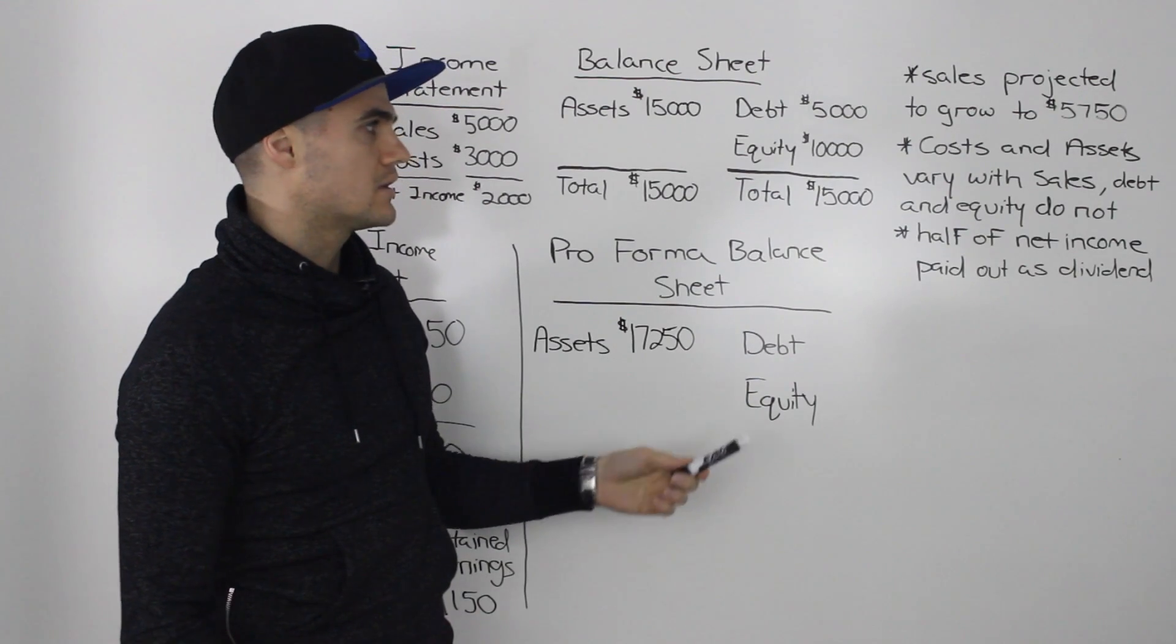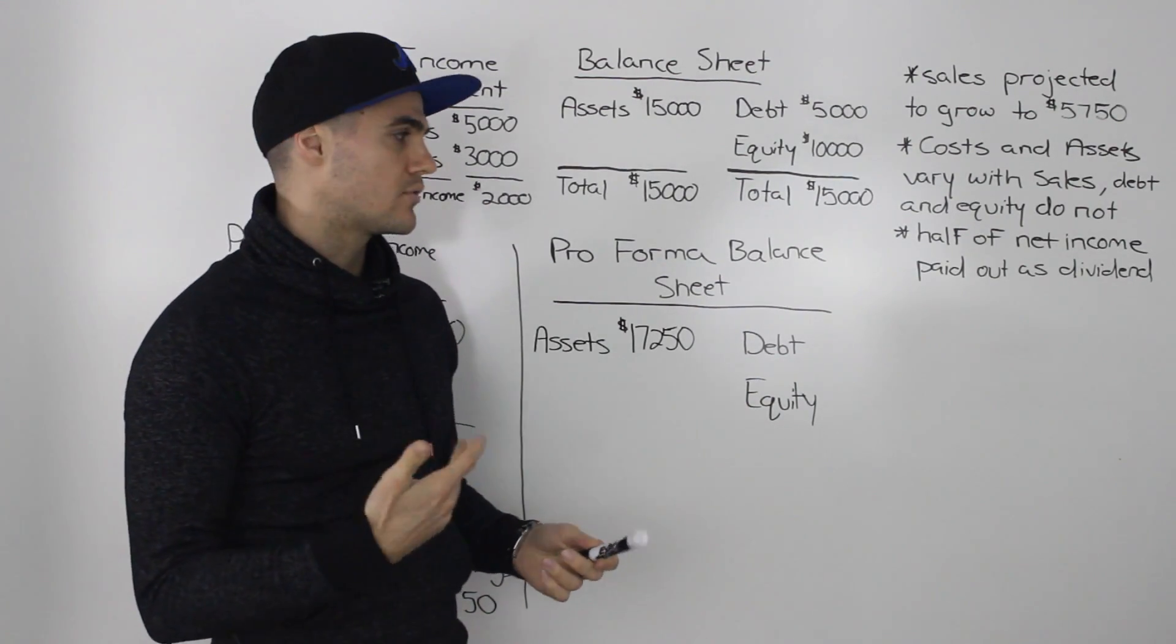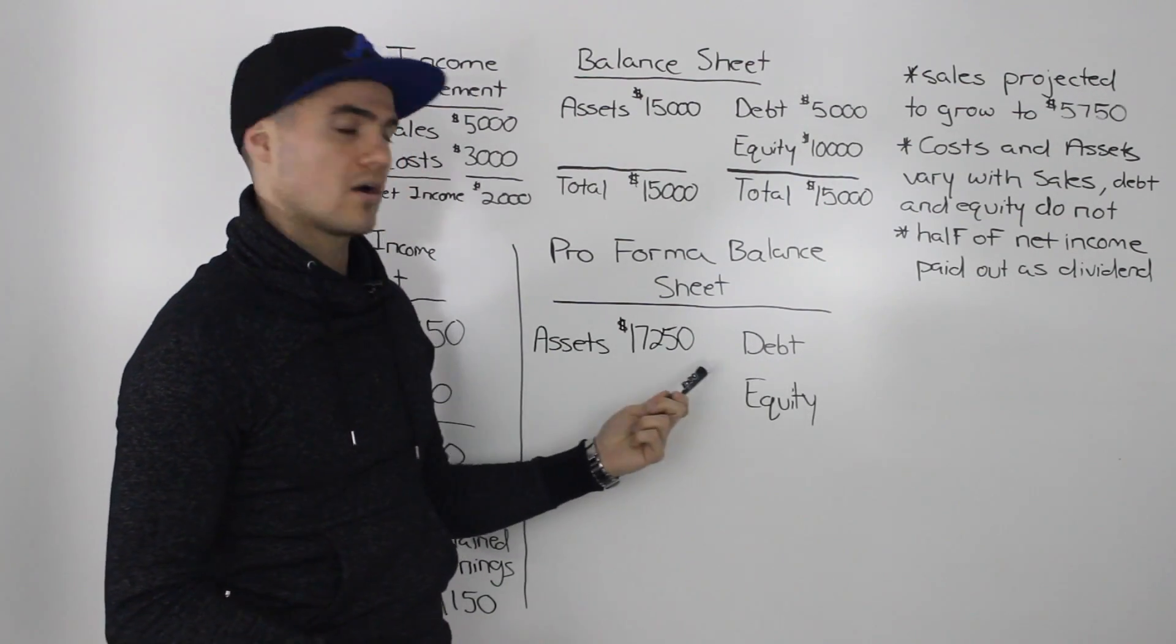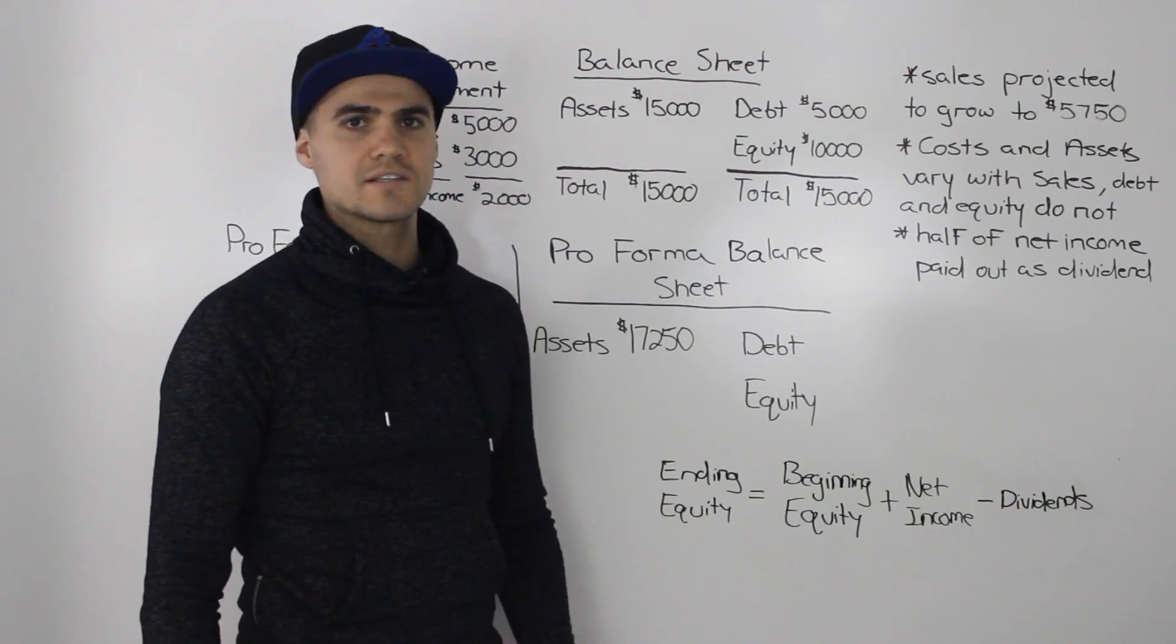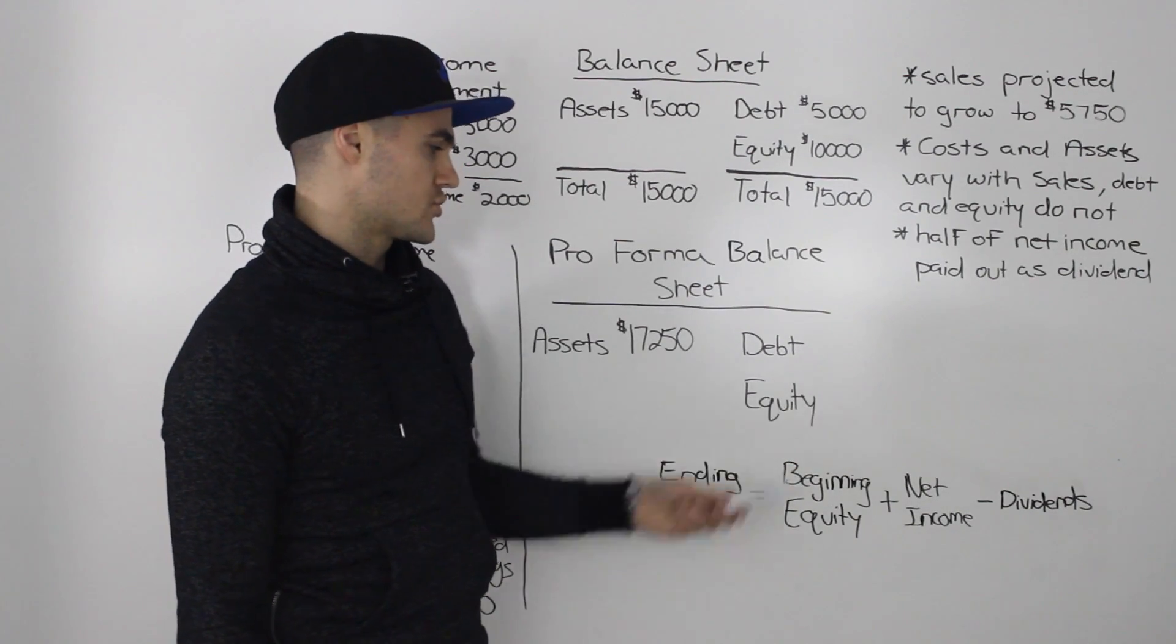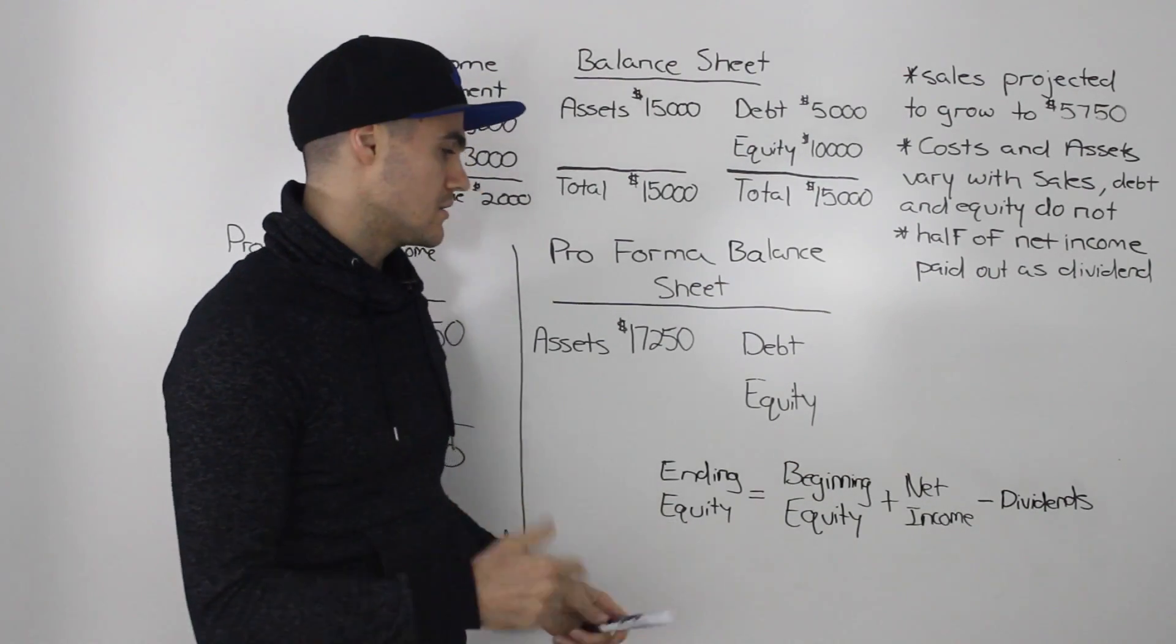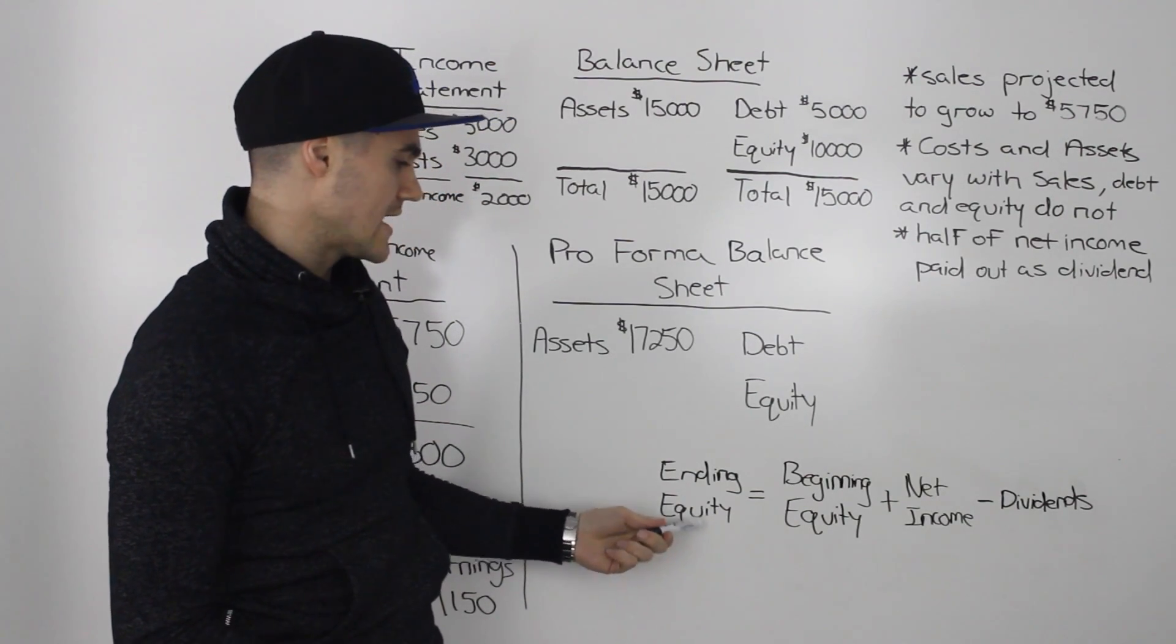The debt and equity, unlike the other example, they do not vary with sales. So what would their amounts be on the balance sheet? Well, let's start off by finding the equity portion of the balance sheet. And we can use that formula that we introduced in the previous example. You may want to write it down again.